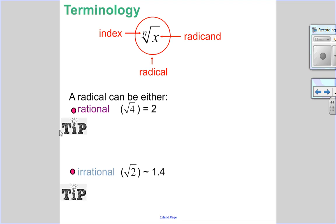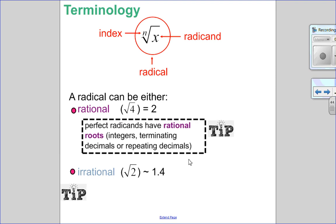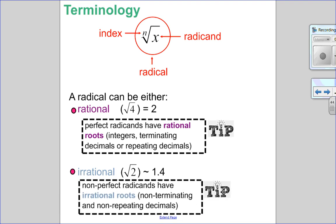A radical itself, when evaluated, can be rational or irrational. For example, the square root of 4 equals 2 — a rational number is an integer, terminating decimal, or a repeating decimal. So if I take the root of something and end up with a rational number, that tells me my radicand is perfect. Irrational numbers — something like the square root of 2, which is approximately 1.4 — are non-terminating, non-repeating decimals. When I get roots like that, I know that my radicands are not perfect.